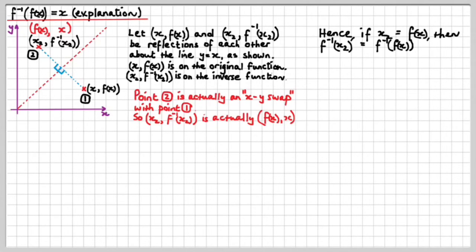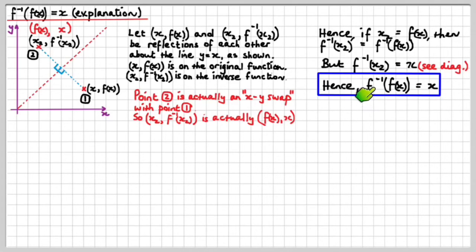Hence, have a look at this. If x₂ equals f(x) then f⁻¹(x₂) is f⁻¹(f(x)) but as we know that point is actually also just x. You can see that so therefore we know that f⁻¹(x₂) is actually x. So, if f⁻¹(x₂) is x but f⁻¹(x₂) is this therefore we can say that this is the case f⁻¹(f(x)) which is the same as x₂ equals x. That's it.